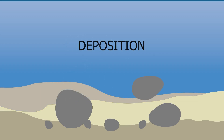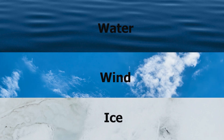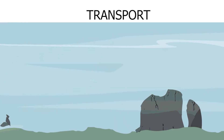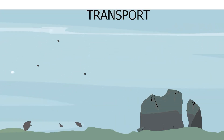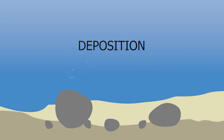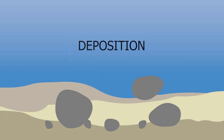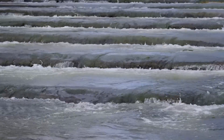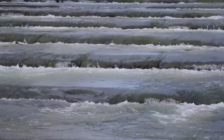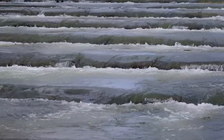Water, wind, and ice are the primary causes of the processes of weathering, erosion, transport, and deposition. On Earth, water is the most common and important agent of erosion.